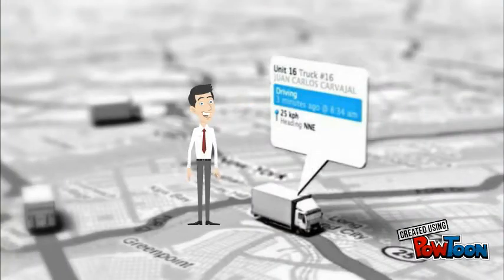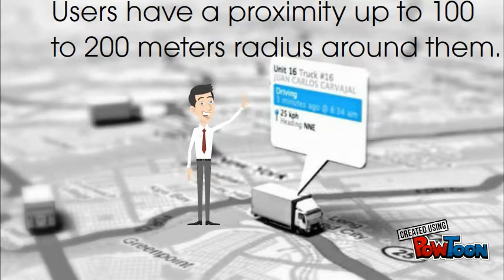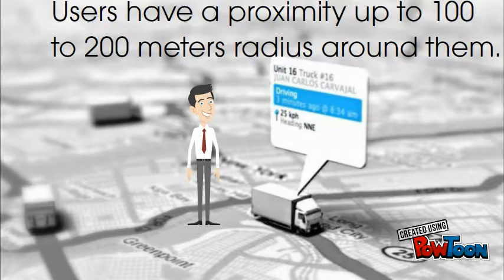Coming to the frontend, for the user to see the data, a GUI is developed which might look like this. Here you can see the GUI clearly shows the vehicle type, speed, and the direction it is heading to in a map.